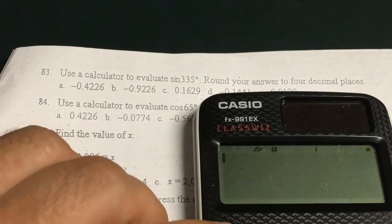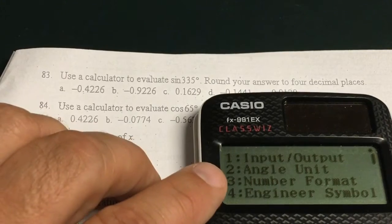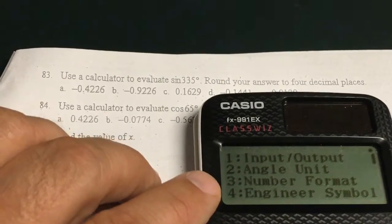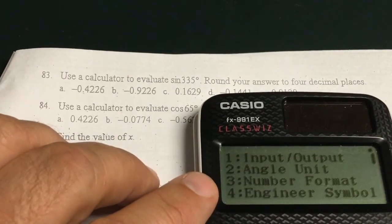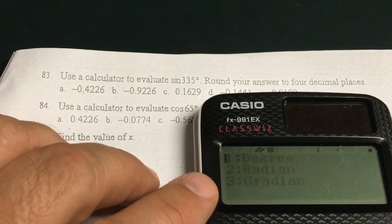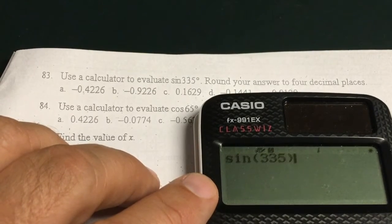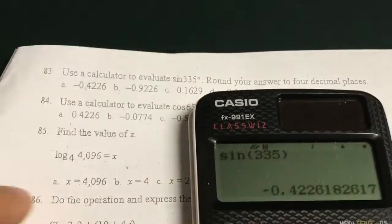Number 83. First thing I have to do is make sure I am in the right mode. I need to go into degree mode because this is a degree here. So I'm going to go to angle, which is number 2, and then place it into number 1 degree mode. Now I can just type in sine of 335 degrees. Not that big of a deal. Negative 0.4226. Choice A.